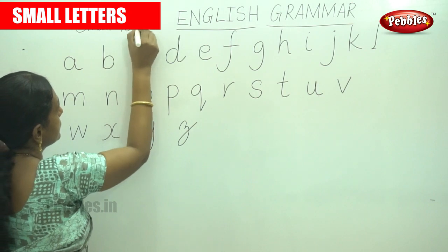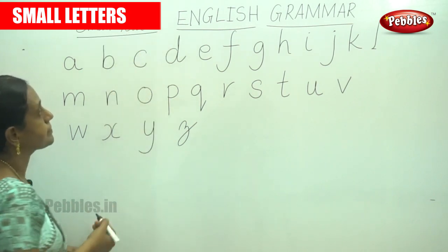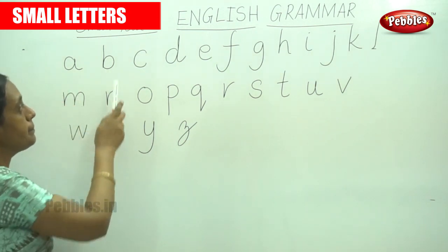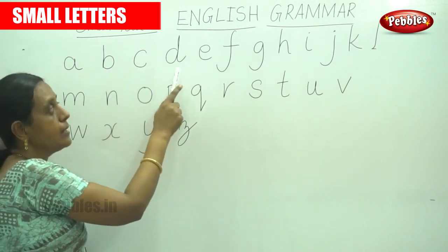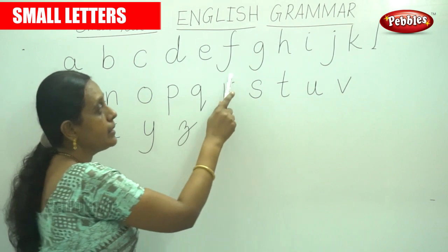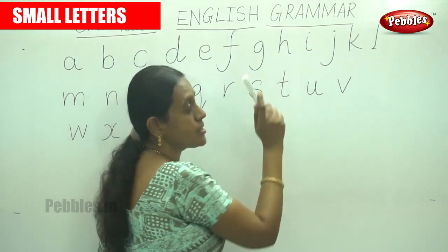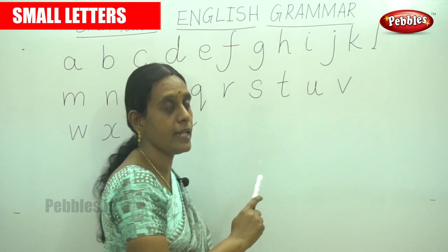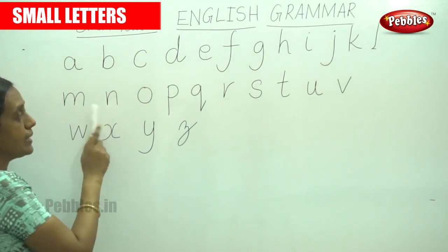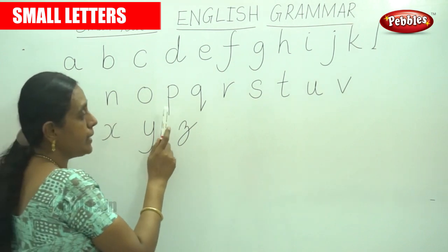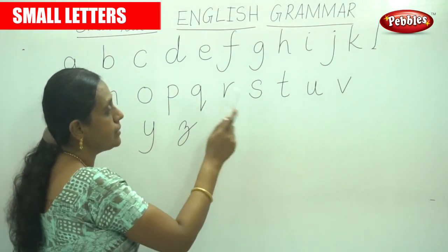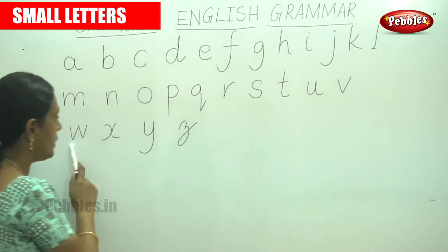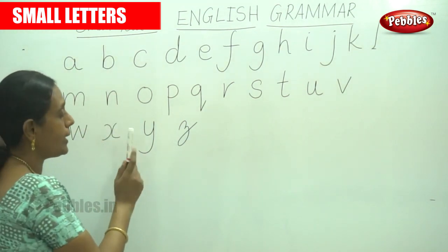Okay, 26 small letters in English: A, B, C, D, E, F, G, H, I, J, K, L, M, N, O, P, Q, R, S, T, U, V, W, X, Y.